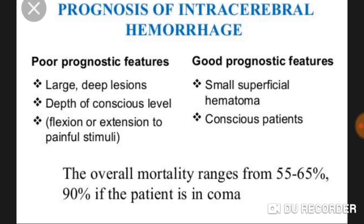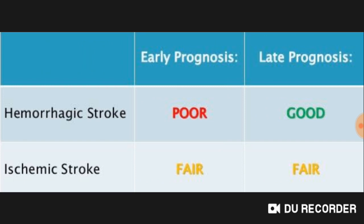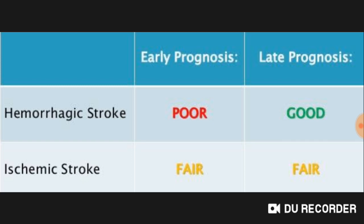Overall mortality ranges from 55 to 65 percent, and 90% of patients may be in a coma, but my patient is still conscious and aware. I hope she will recover 100 percent. Early prognosis in hemorrhagic stroke is poor, but late prognosis is good. Maximum recovery with stroke occurs within 7 to 14 days, so I need to wait for two weeks.